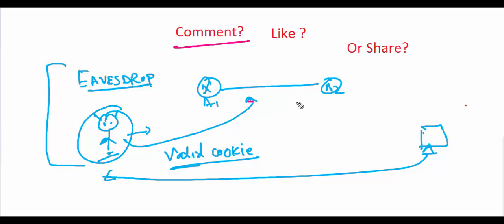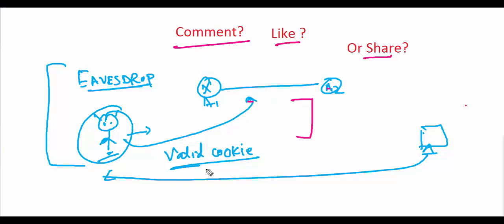Please comment and let me know: once an eavesdropper or attacker has a valid cookie, can he launch an attack? How does the cookie generation mechanism's required conditions prevent such an attack? Do these devices drop the attack or become victims? Let me know in the comment box. Thank you for watching — I hope this has been informative.